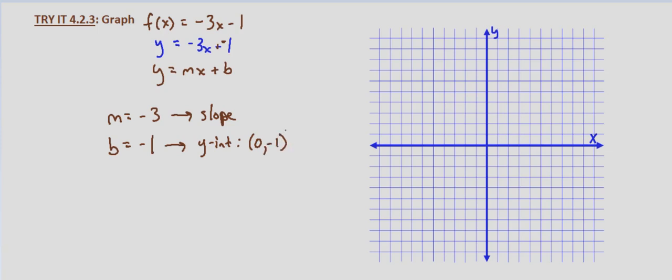Now we can use our y-intercept. We'll go to (0, -1). And our slope is -3, which means that's the same thing as -3/1. Which means we go down 3 and right 1.